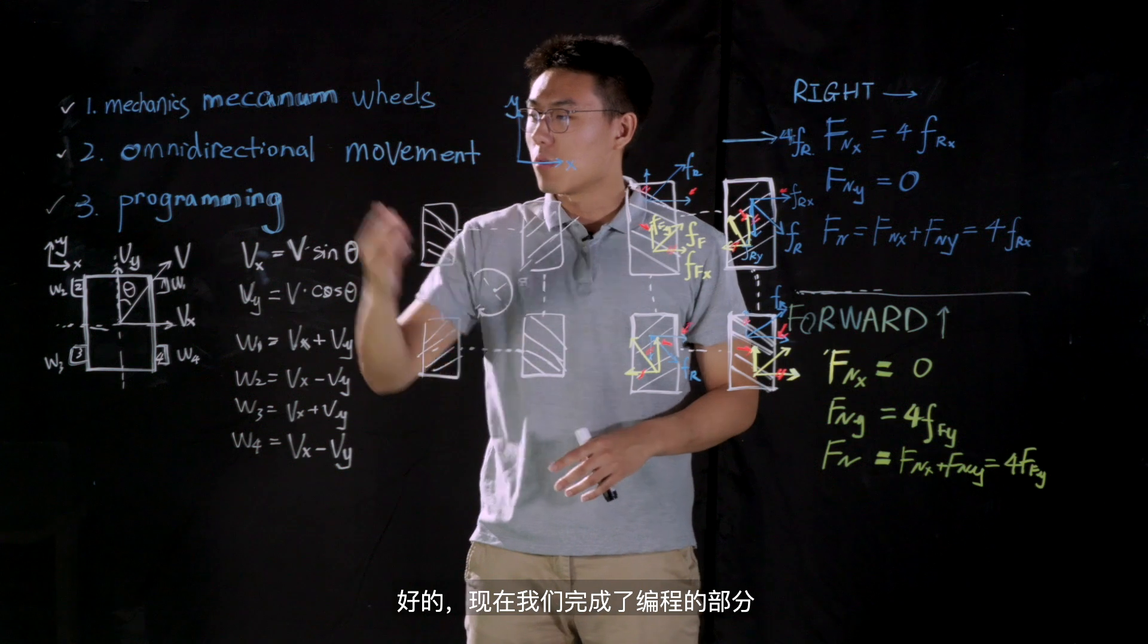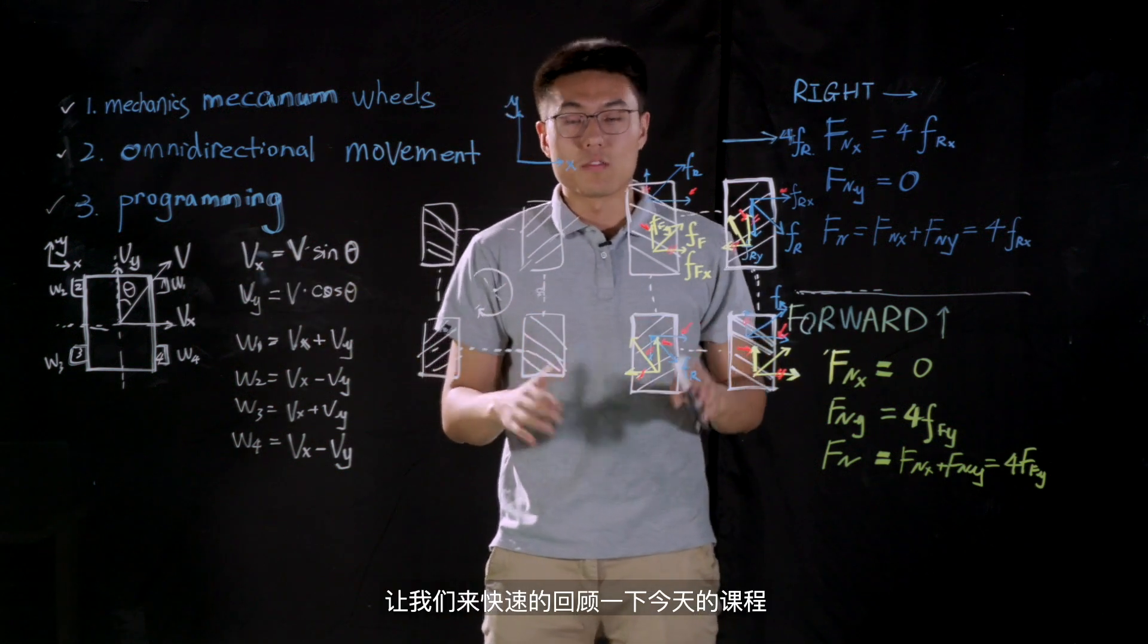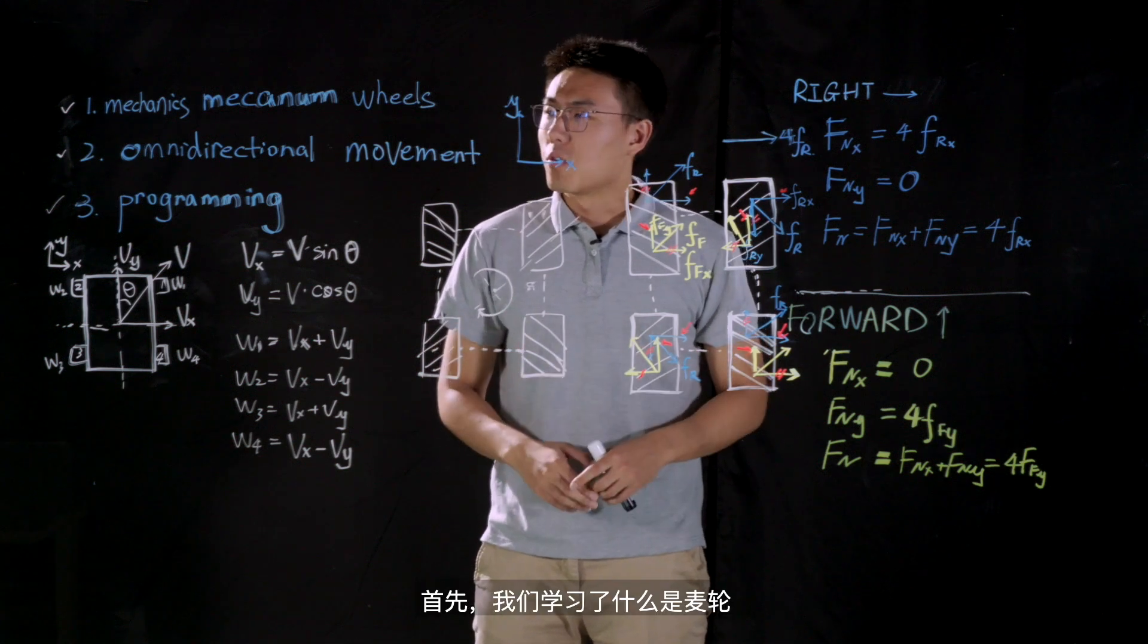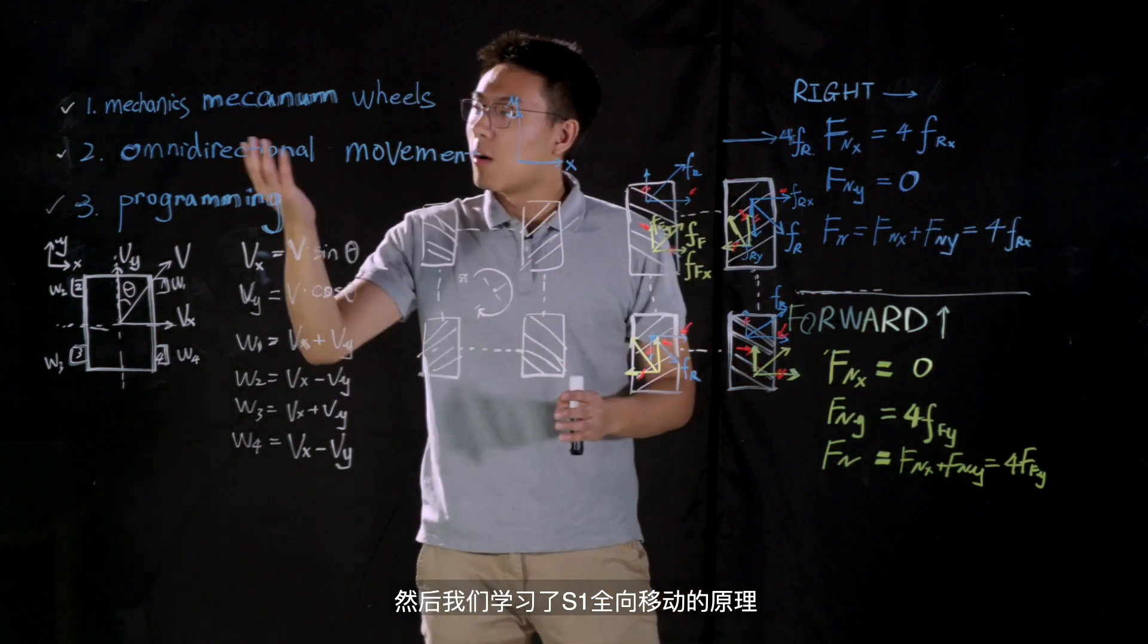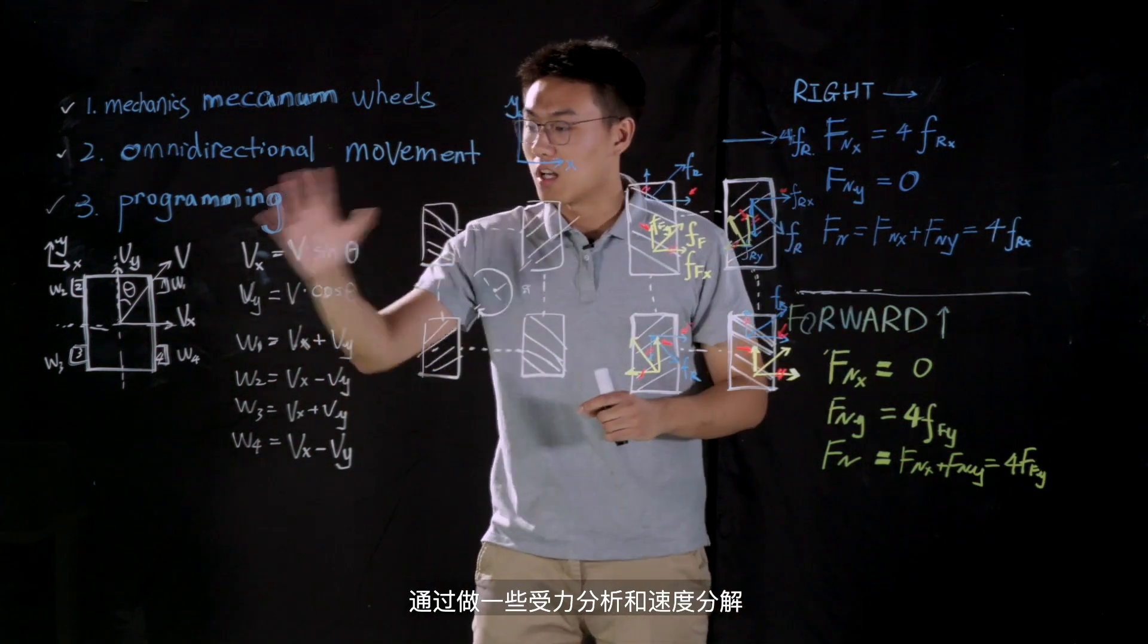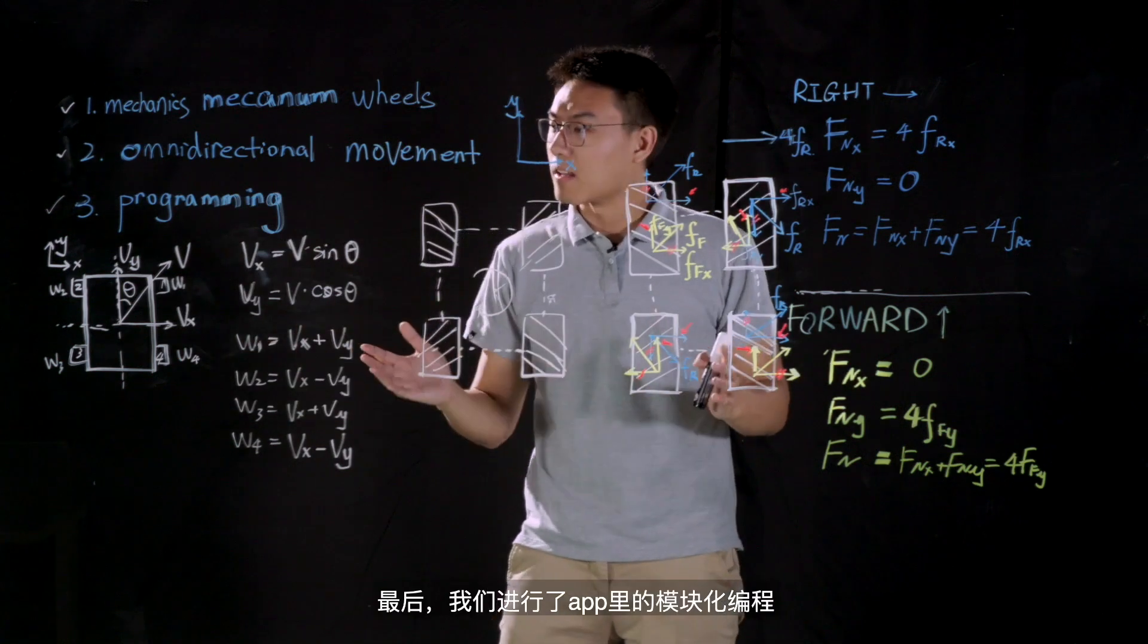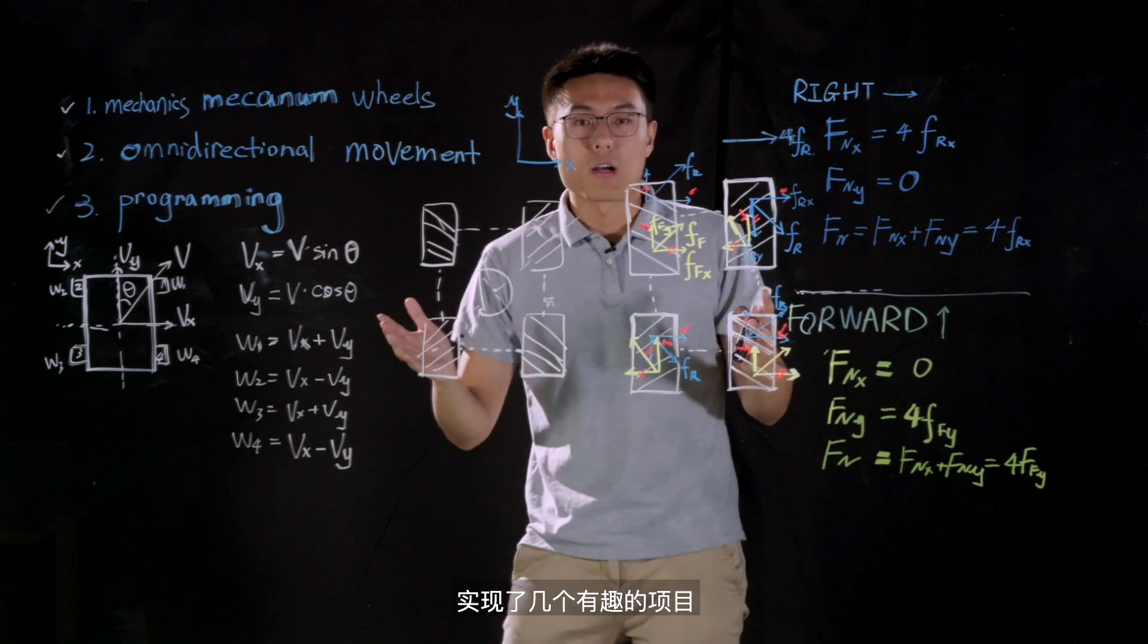Great. We've done the programming part as well. Now, let me do a very quick recap of today's lesson. In the first place, we learned what the Mecanum Wheel is. Then, we studied the omnidirectional movement of S1 by doing some force analysis and velocity analysis. And in the end, we used some programming modules in the app to realize some very interesting projects.